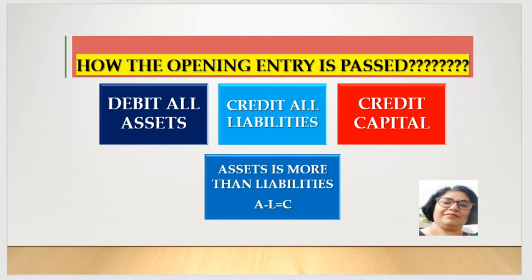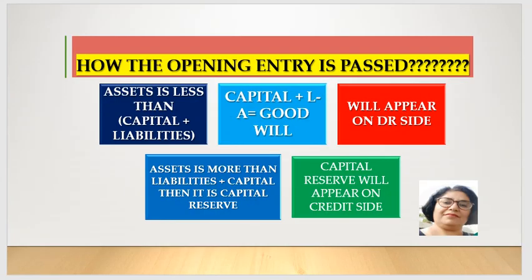If our assets are less than capital and liabilities - that is, asset equals liability plus capital - the total is balanced. But if the total of assets is more than capital and liability, the difference is due to goodwill. Goodwill will appear on the debit side. And if the total of liabilities and capital are more than assets, then the difference is due to capital reserve, and we have to put it on the credit side.